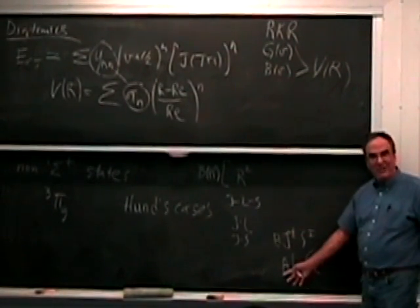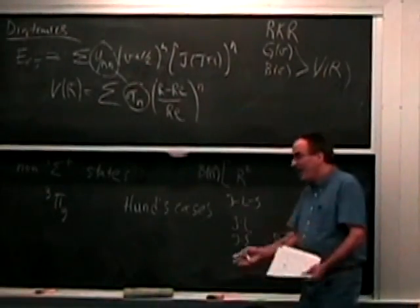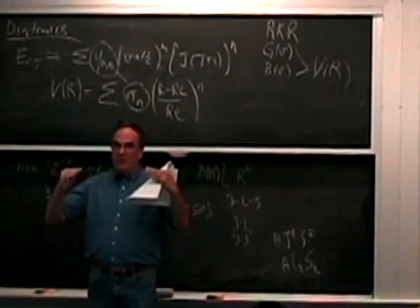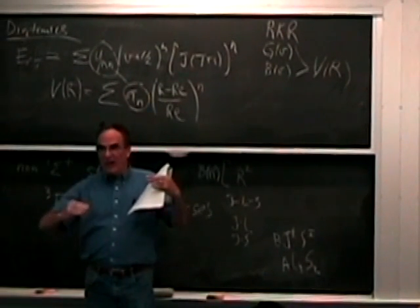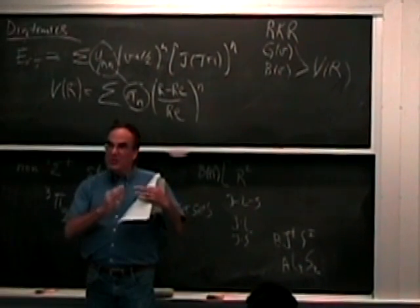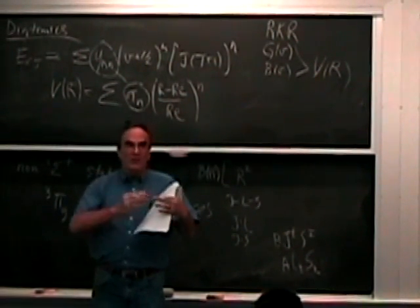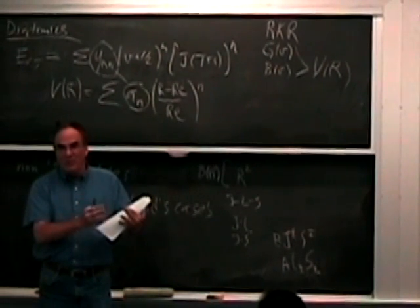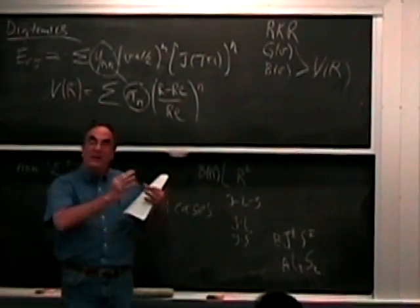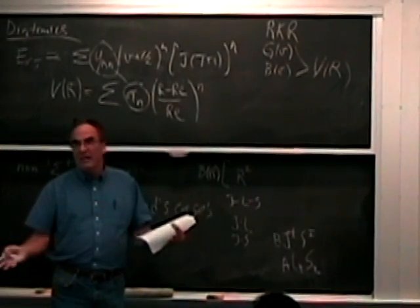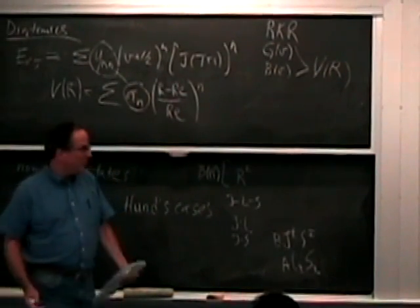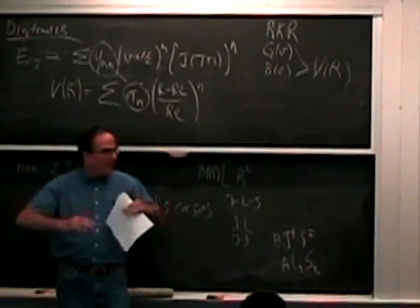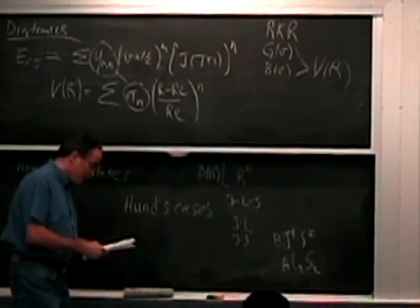At low J, the spin-orbit coupling wins and you're in Hund's case A; as you go up in J, the spin-uncoupling term B·J±S∓ grows with J and eventually wins, taking you toward Hund's case B. Perturbation theory helps you handle this transition. In the energy level structure of almost every spectroscopic problem, there are two terms at war — one trying to destroy the limiting case you're in, and another trying to preserve it. It's important to know which will win, because that determines the pattern you'll see in the spectrum.